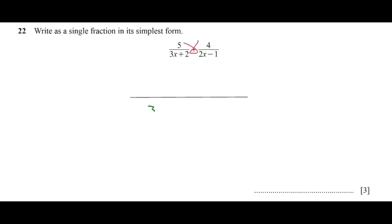3x plus 2 times 2x minus 1. The numerator will be 5 times 2x minus 1 plus 4 times 3x plus 2, all over the denominator (3x plus 2)(2x minus 1).